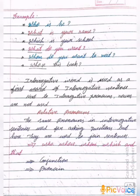The pronouns who, whose, whom, which, and that are called relative pronouns. In relative pronouns, at the same time they are doing two types of work: first as a conjunction — that is, joining words — and second as a pronoun.